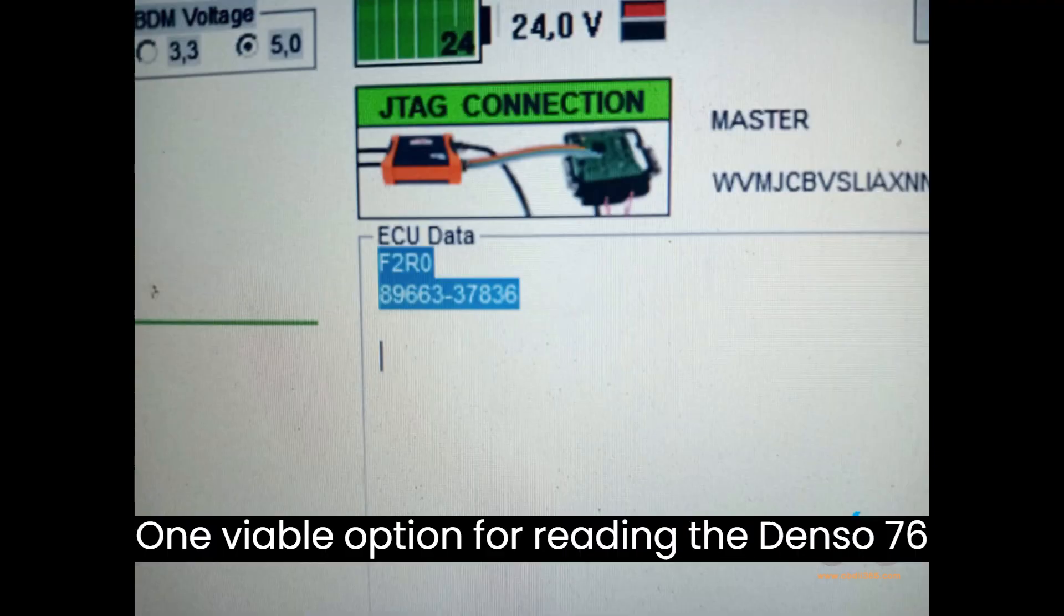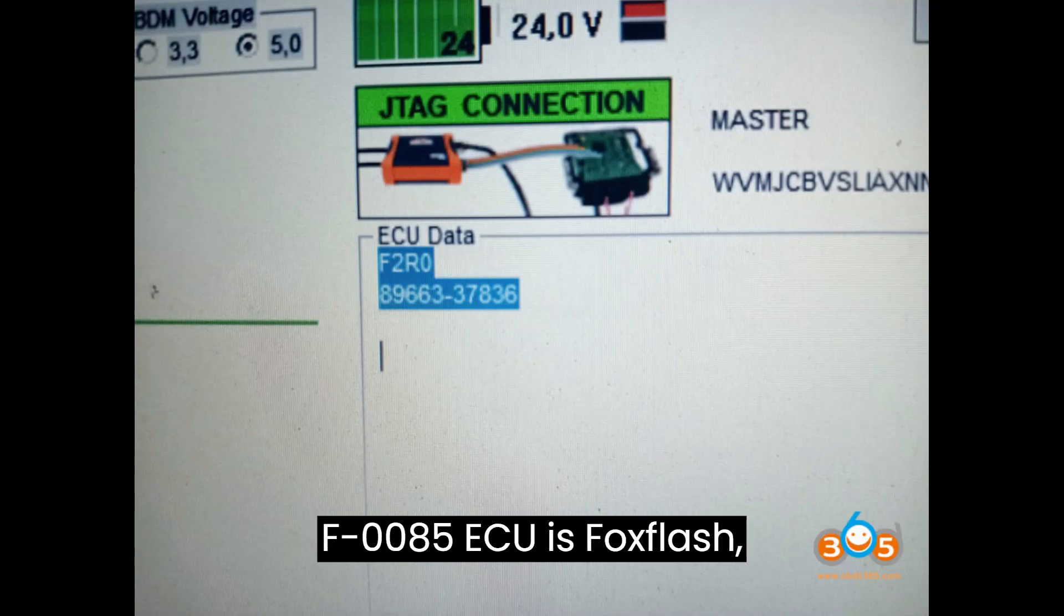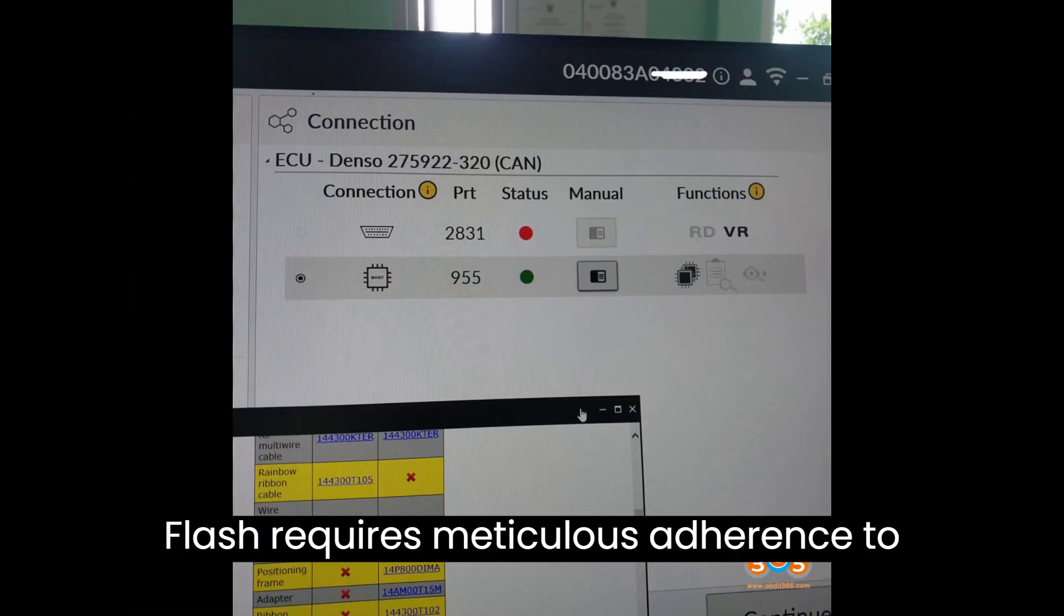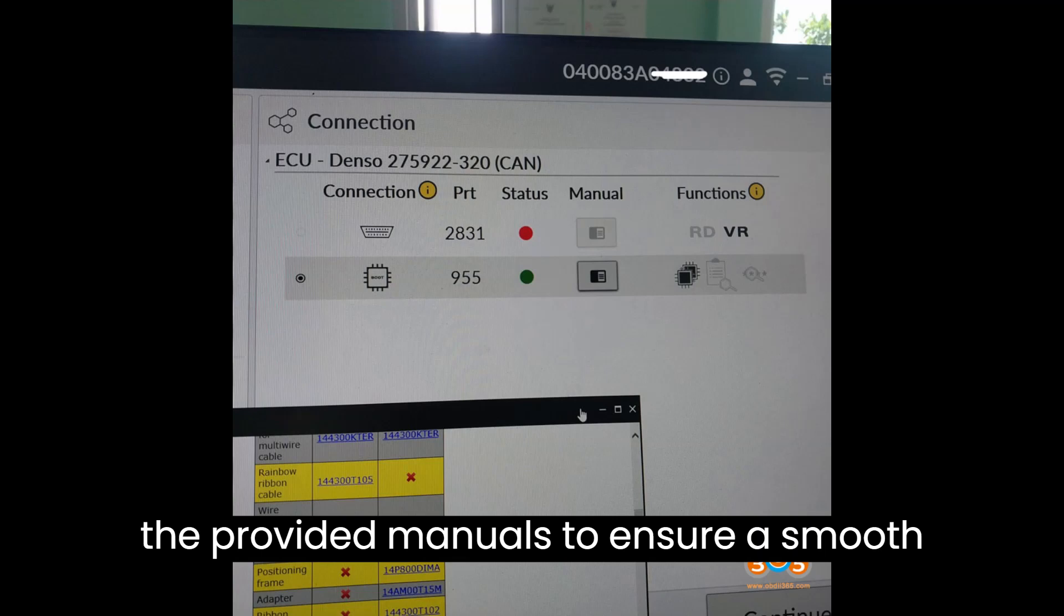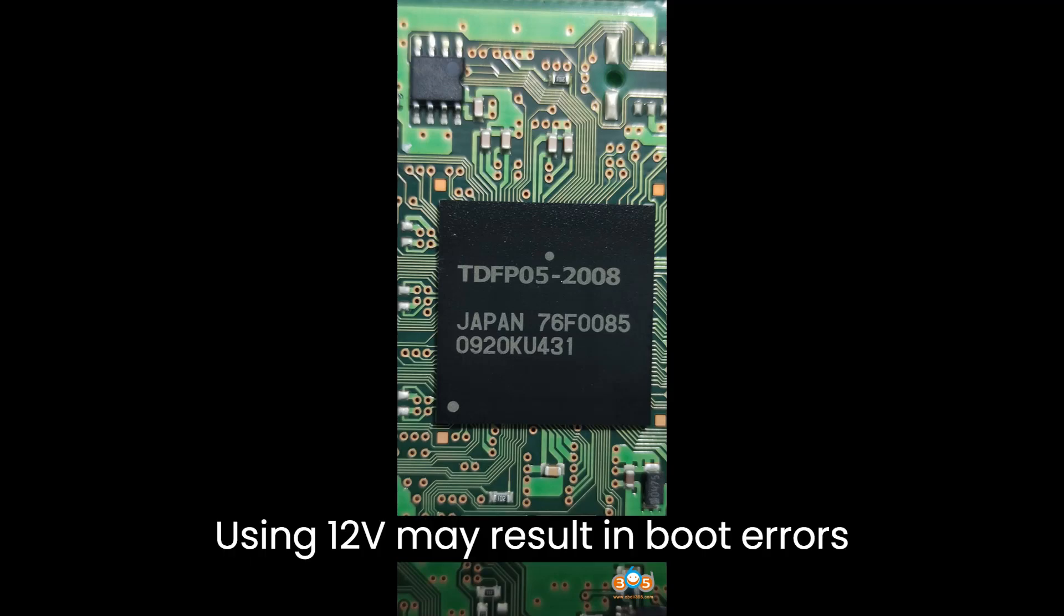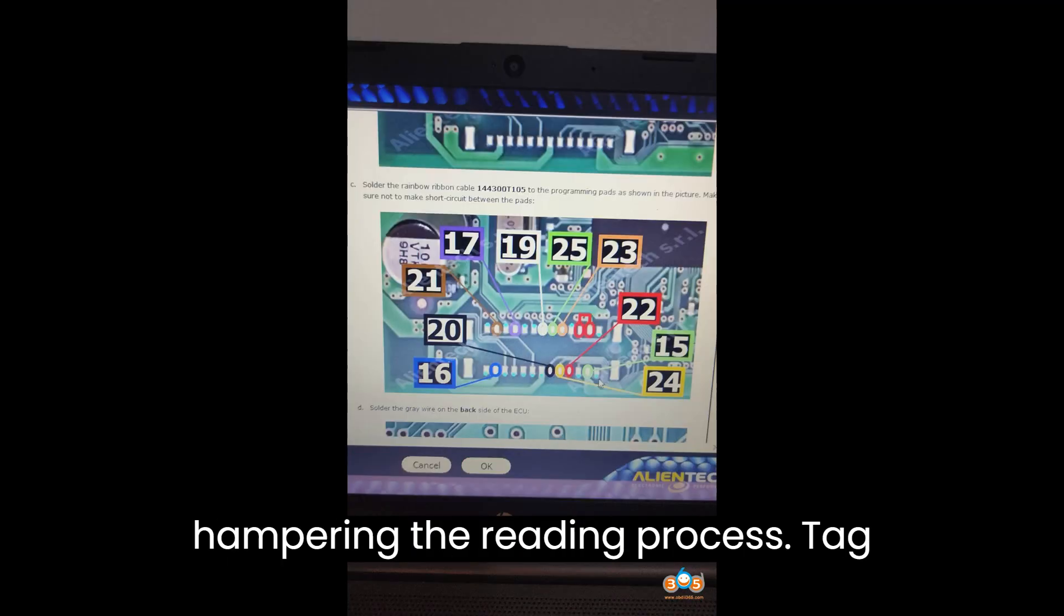One viable option for reading the Denso 76F0085 ECU is FoxFlash, particularly in JTAG mode. Utilizing FoxFlash requires meticulous adherence to the provided manuals to ensure a smooth connection process. It's essential to note the necessity of a 24V power supply. Using 12V may result in boot errors, hampering the reading process.